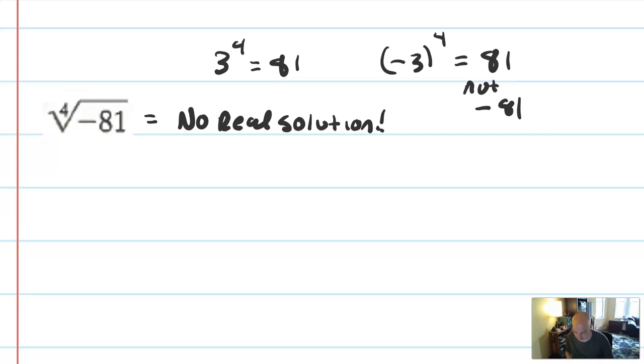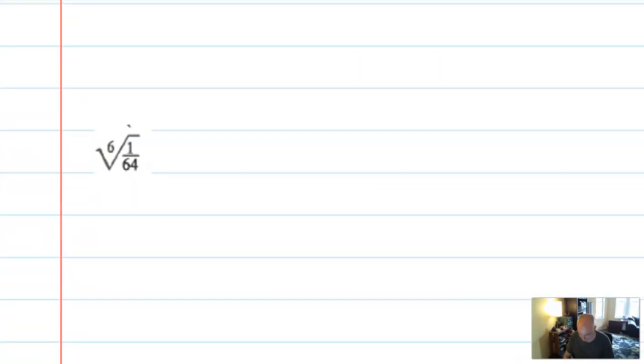So that's something to watch out for, especially now that we're dealing with these higher indices. And it's no real solution here because it's a fourth root, which is specifically an even root. All right, next one. That was kind of a trick. Let's do something else.